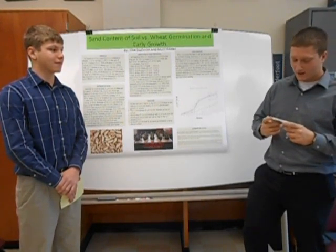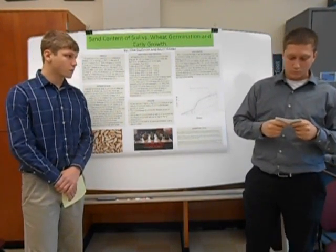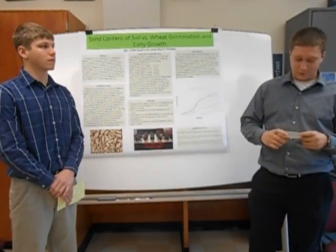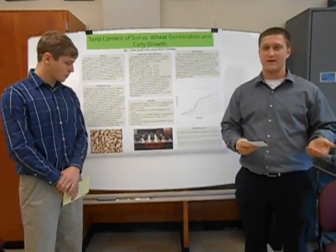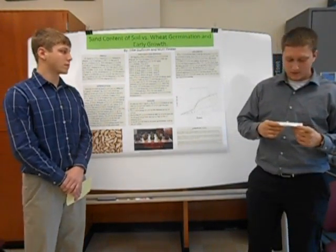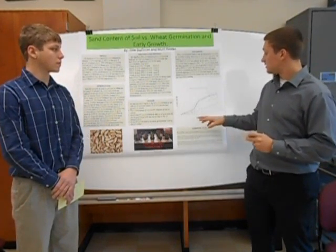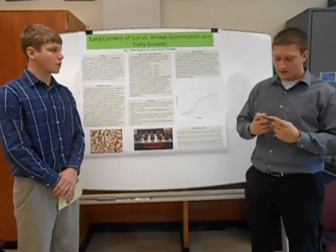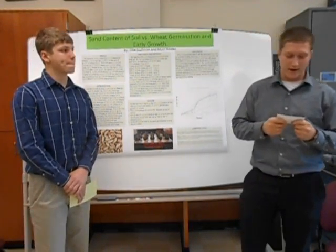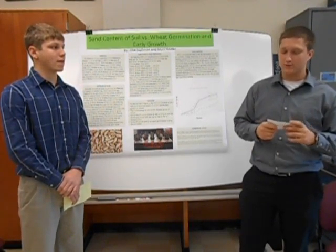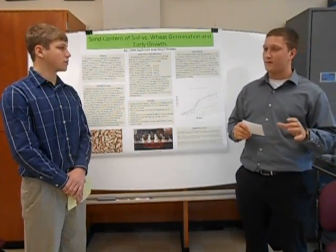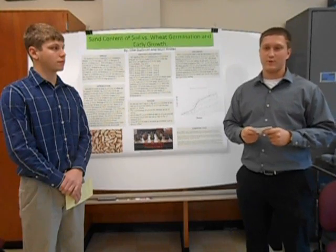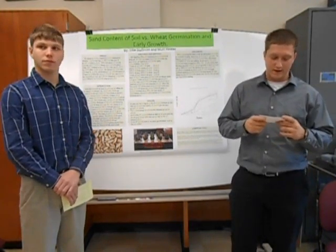Moving on to our discussion — after we looked at all the results, we found that our hypothesis was wrong. The control group was actually the lowest, and we thought it was going to be the highest. The sand actually helped increase the growth of the wheat plants. The heavier the concentration of sand to peat ratio, the better the growth, until we got to about the fourth level, where it was just a little too much sand and the wheat plants started wilting. This was probably due to the drainage running through too fast, so they weren't getting enough water.